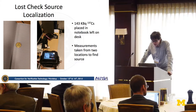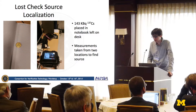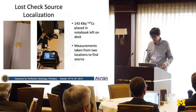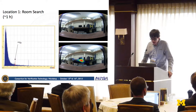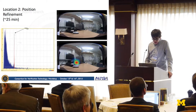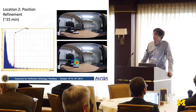The first demo was a lost check source localization. We placed a check source in a notebook in the lab and wanted to see how effectively you could find it using this camera. We started about two meters away and ran for an hour — as you can see, an image formed right on the desk where the source was placed. We then moved in closer for positional refinement and after 25 minutes got a clearer picture on the notebook of where the source was.